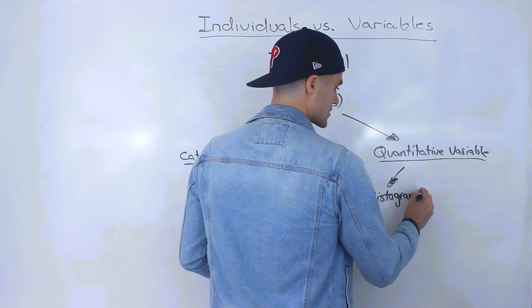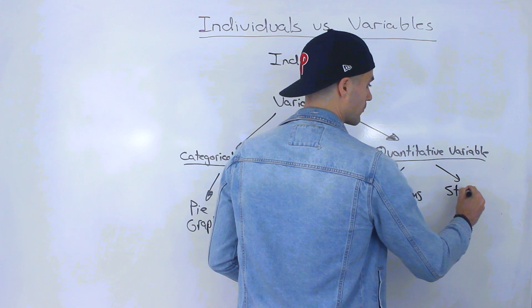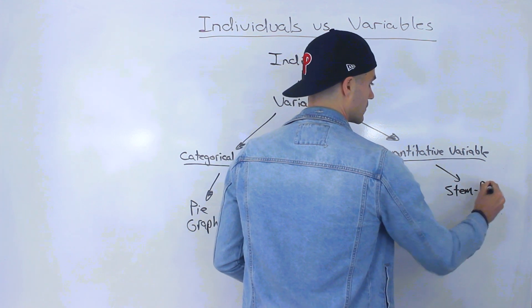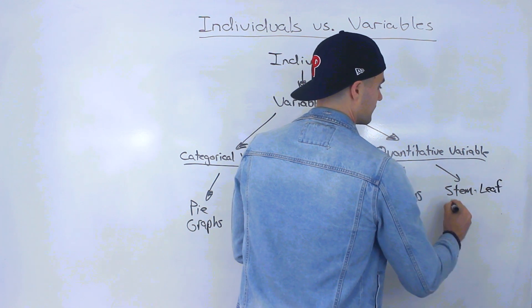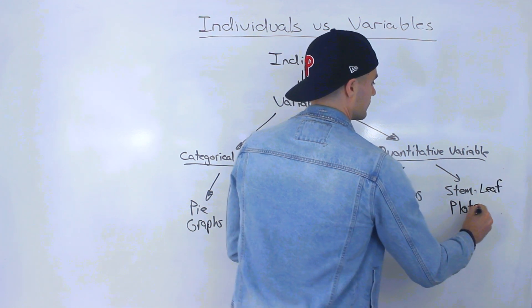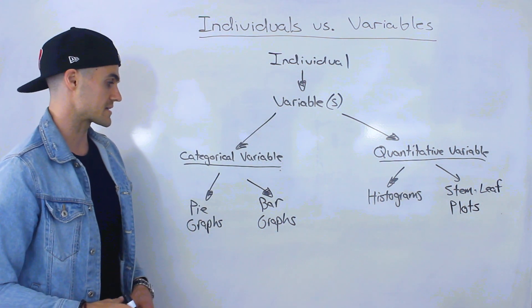And then quantitative variables. Both tools, histograms we're going to go over and then also something called stem plots or rather stem leaf plots. And so that's what we're going to cover in the next couple of videos. We're going to have a video on each of these tools separately.